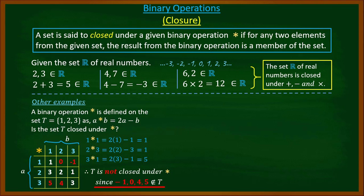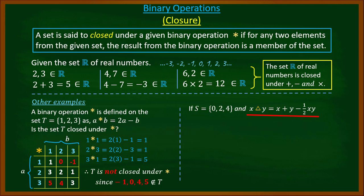Let's look at another example. The set S contains the elements zero, two, and four, and a binary operation is defined as x⊙y = x + y − ½xy. Is the set S closed under the operation?